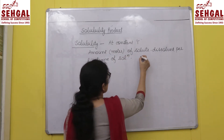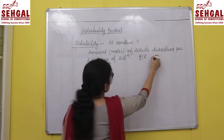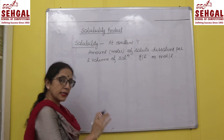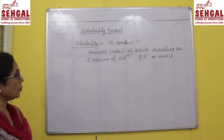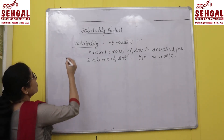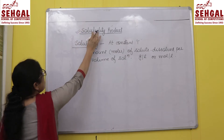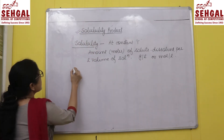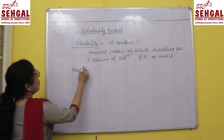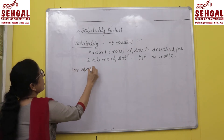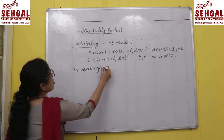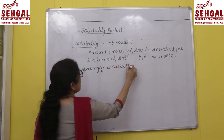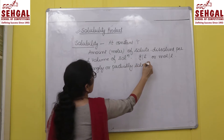Its units can be grams per liter or moles per liter; in either of the two we can depict the term solubility. But when we define the solubility product, it should be very clear that this is applicable for sparingly or partially soluble salts only.